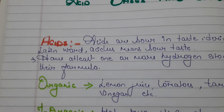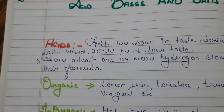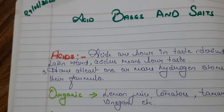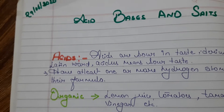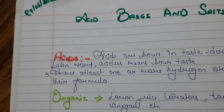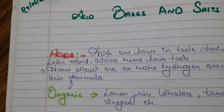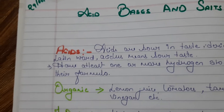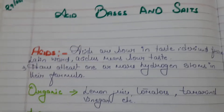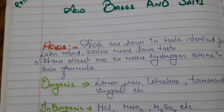What are acids? Acids are sour in taste. The term is derived from a Latin word 'acidus', which means sour taste. Acids have at least one or more hydrogen atoms in their formula.